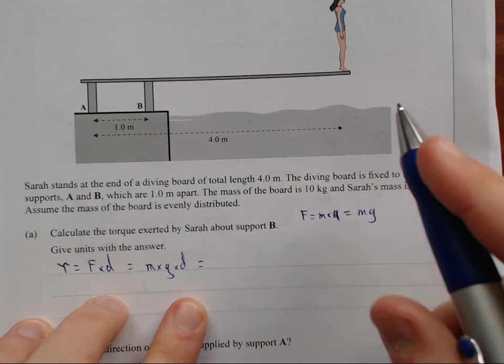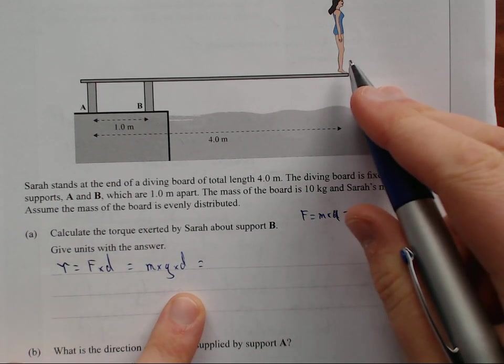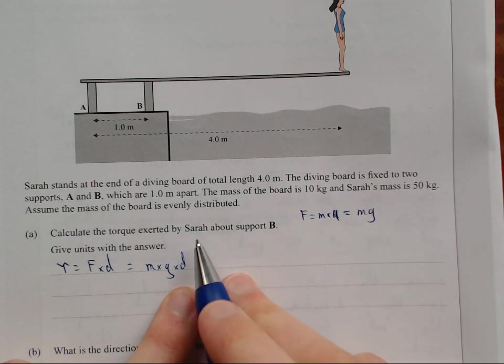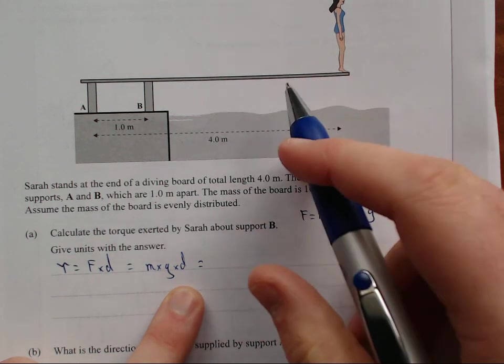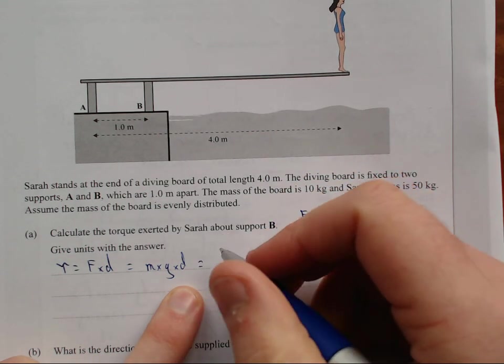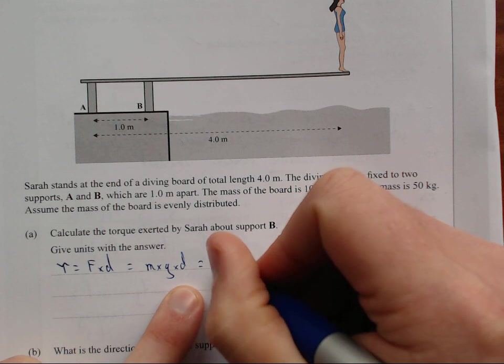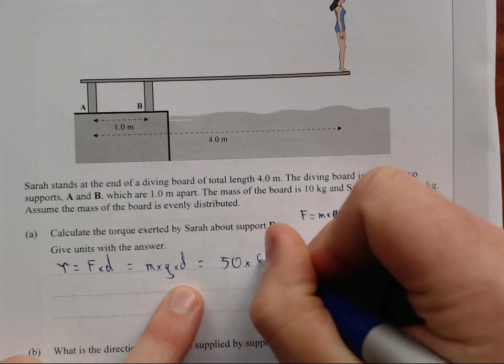Which just gives me, and it's just the mass of Sarah. Because it's just, it's only about the torque exerted by Sarah. Not about the whole, you know, the torque around point B.